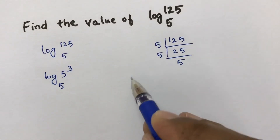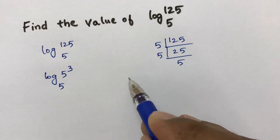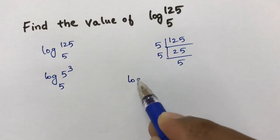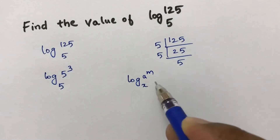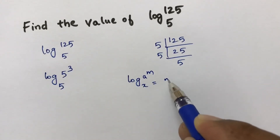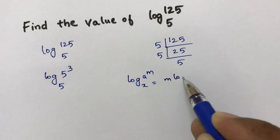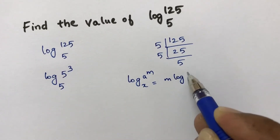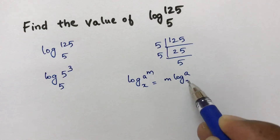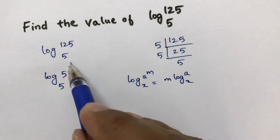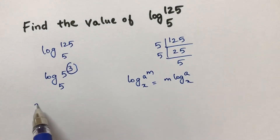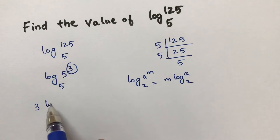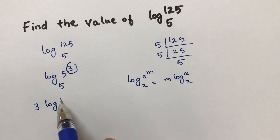This is in the form of the logarithm power rule: log a to the power of m to the base x equals m times log a to the base x. So here, in place of m we have 3, giving us 3 times log 5 to the base 5.